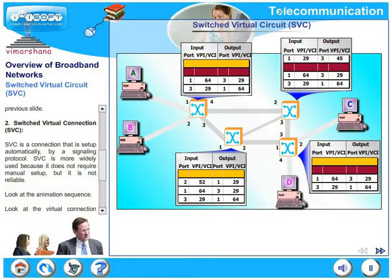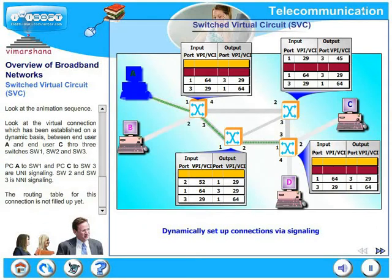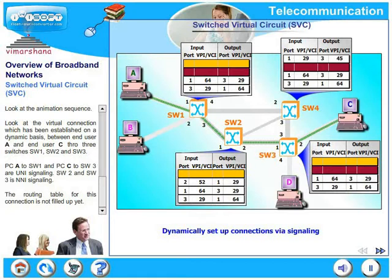Look at this animation sequence. Look at the virtual connection which has been established on a dynamic basis between end user A and end user C through three switches SW1, SW2, and SW3. PCA to SW1 and PCC to SW3 are UNI signaling. The signaling between SW2 and SW3 will be NNI signaling.